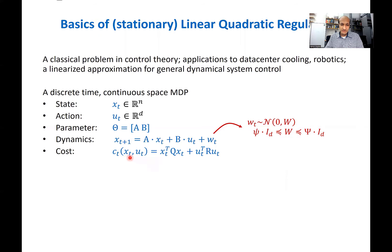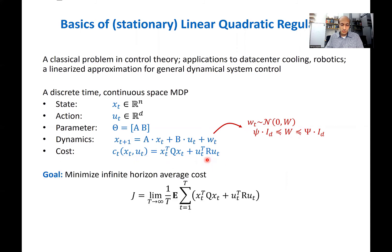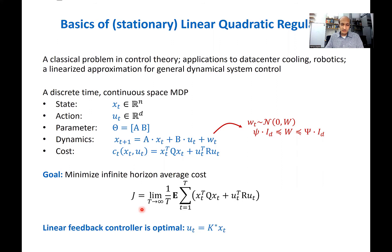That's the linear part of the LQR. The cost at time t, given the current state Xt and action Ut, is given by a quadratic function of the state and the action — that's the quadratic part of LQR. Our goal is to minimize the infinite horizon average cost: the sum of costs over T time steps, averaged by T, in the limit as T goes to infinity. The classical result says that the optimal controls have a very nice structure.